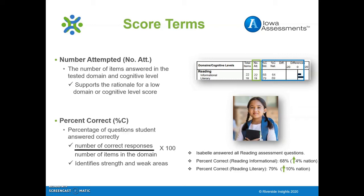The percent correct score is the percentage of questions the student answered correctly, found by dividing the number of correct responses by the number of items in a subject domain and multiplying by 100. At the class, school, system or diocese, and national levels, percent correct is reported as an average percentage. This score is used to summarize a student, class, school, or system level's performance compared to a normative group in a given content domain, and provides educators with an initial indication of relative strengths and weaknesses. Isabel answered more reading literary questions correctly than informational questions. Practice activity topics she could work through might include main idea and details, drawing conclusions, identifying text features, and analyzing literary elements such as characters and setting.